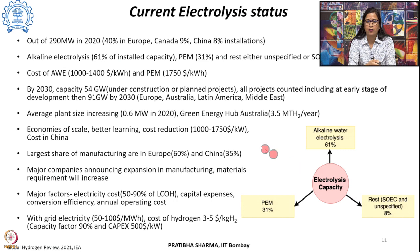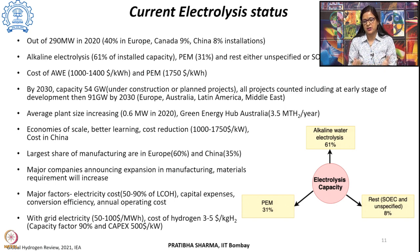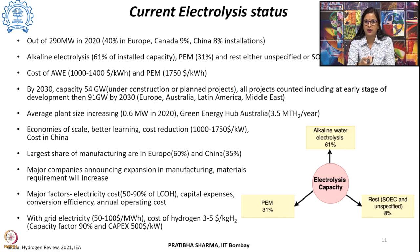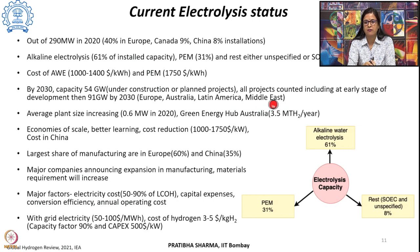The cost of alkaline water electrolysis lies in the range of $1,000 to $1,400 per kilowatt, and for PEM it is around $1,750 per kilowatt. By 2030, considering projects under construction or planned, this capacity is expected to grow to 54 gigawatts — or up to 91 gigawatts if early-stage projects are included. The major contributors will be Europe (~22 GW), Australia (~21 GW), Latin America (~5 GW), and the Middle East (~3 GW).